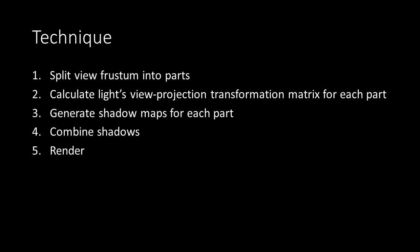The basic technique involves approximately four steps. First, you split the view frustum into parts. Second, you calculate the light's view projection transformation matrix. Third, you generate shadow maps for each of those parts, and fourth, you combine them. We'll go through each of those steps in a moment.